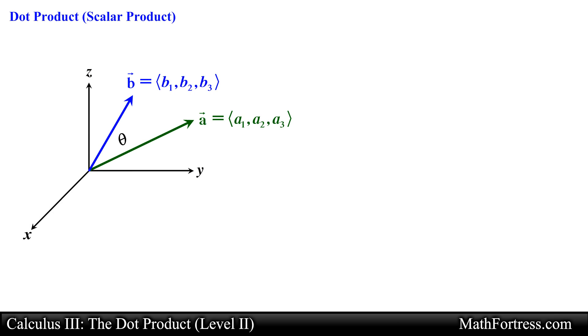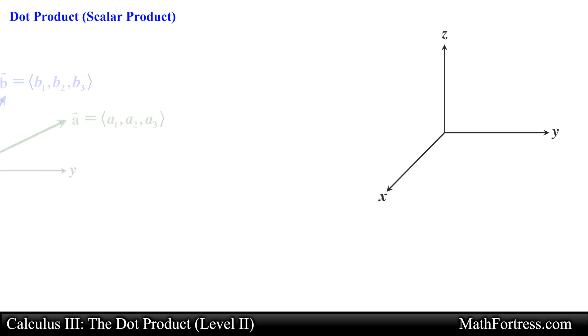Before we start deriving an expression to calculate the scalar product by using the components of vector A and vector B, we first need to determine the dot products of the unit vectors i, j, and k.